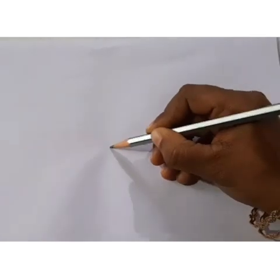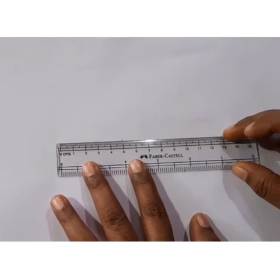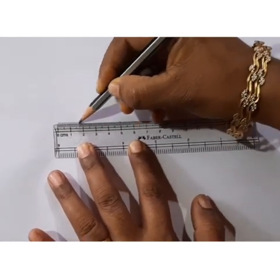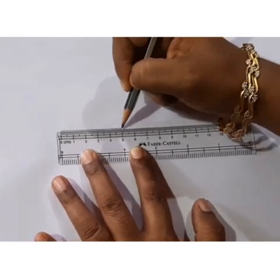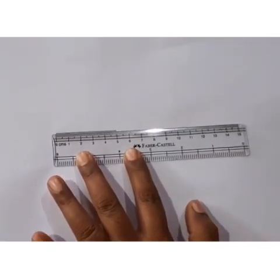Step 1. First plot a point on the paper. To draw a line segment of length 5 centimeters, start from 0 and measure to 5 on the scale.